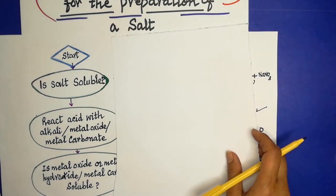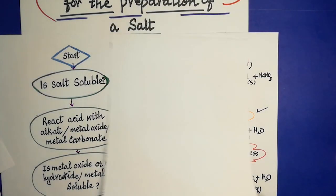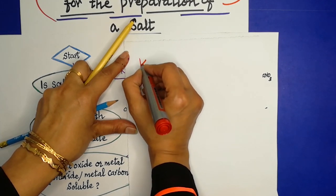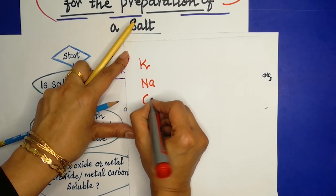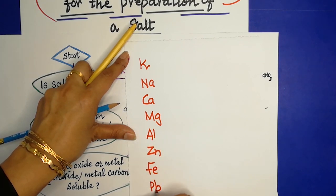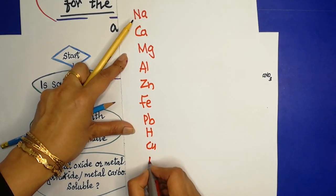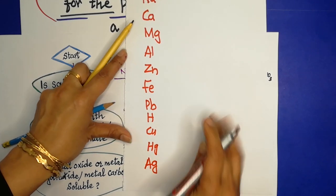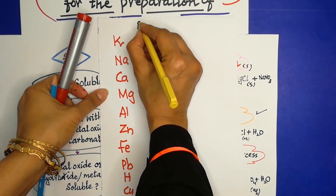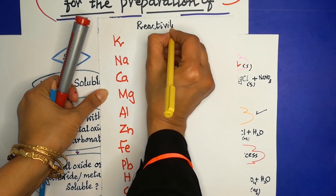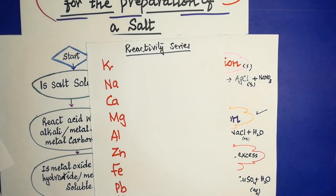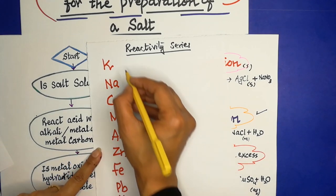Now let me explain further using the reactivity series. The reactivity series is very important — it helps a lot when choosing the method to prepare a salt. If we have to prepare a salt of very reactive metals at the top of the reactivity series,